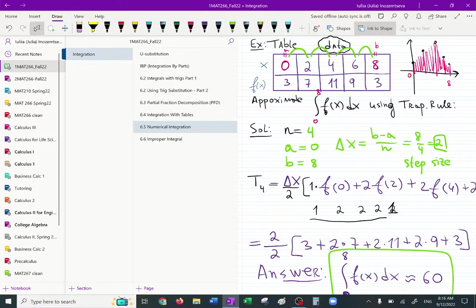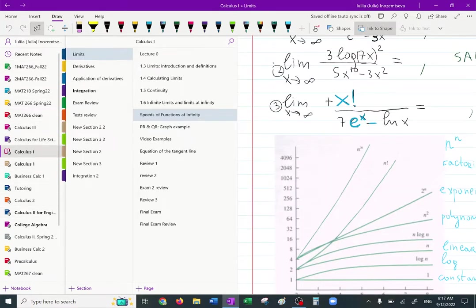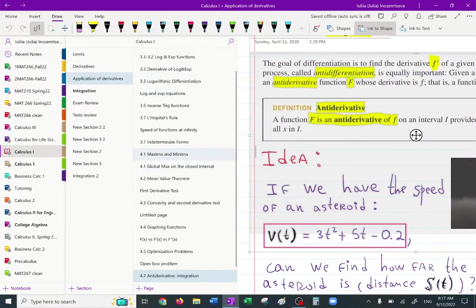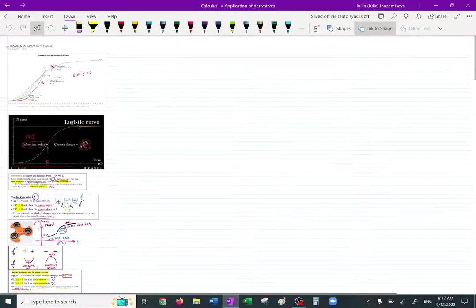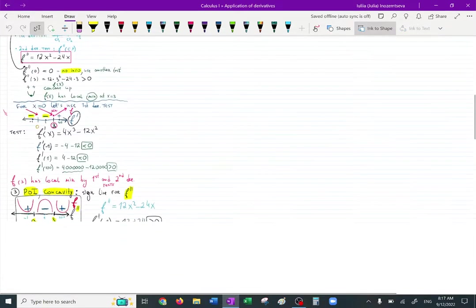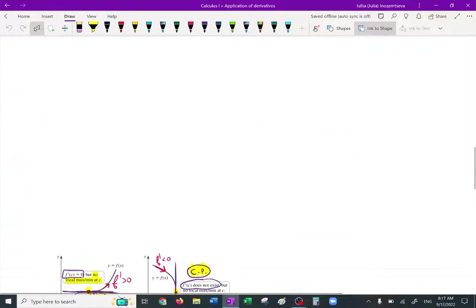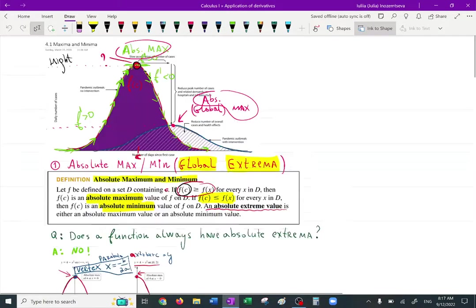It's the same idea I teach when showing concave up and concave down situations in Calculus 1. I show them graphs of applications—let me find the COVID data concavity graph. Maybe maximum-minimum.